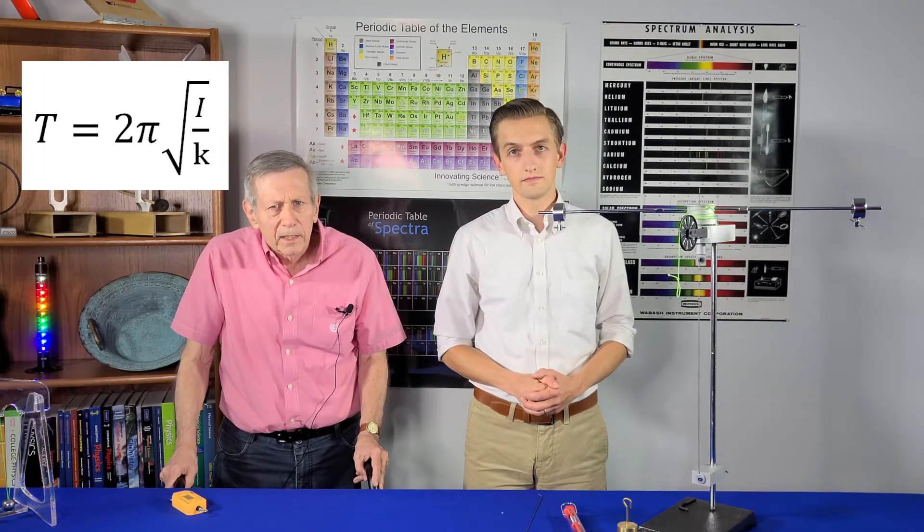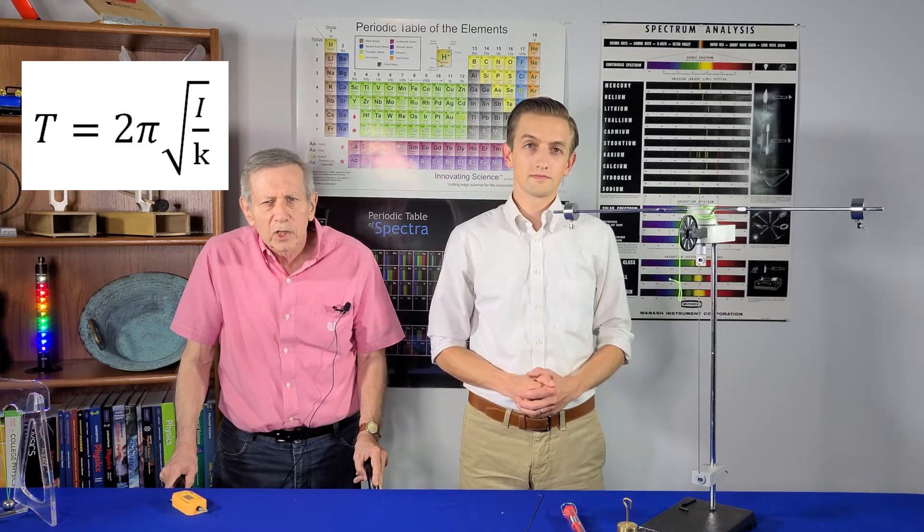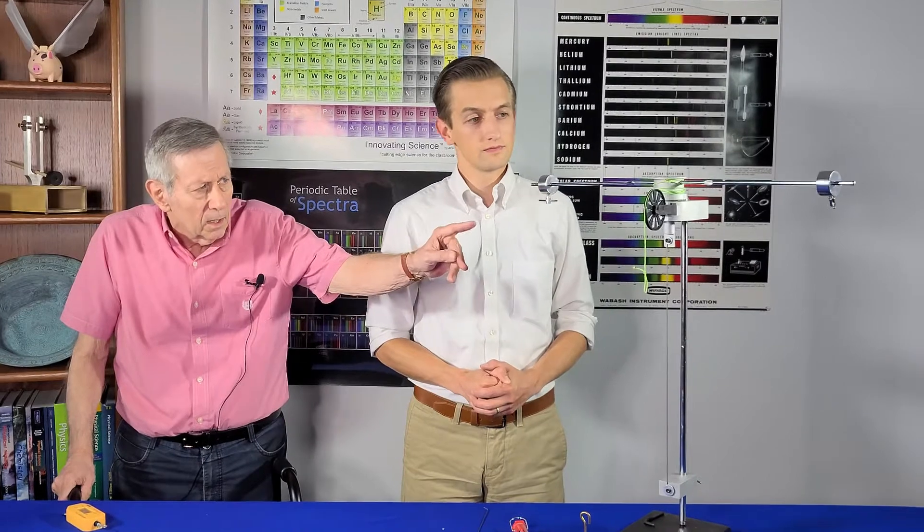Inertia I is found by doing a summation of the inertia of the pendulum parts which include the hub, the two rods, and the movable weights.